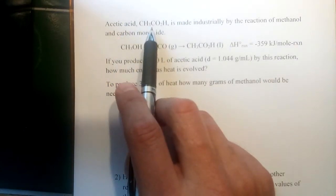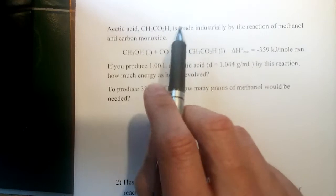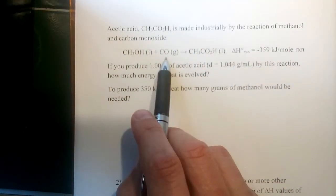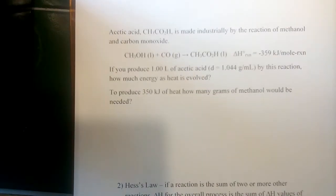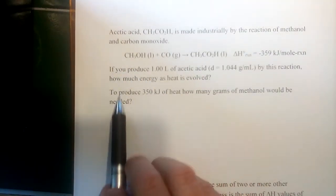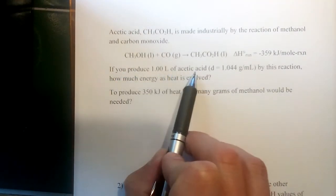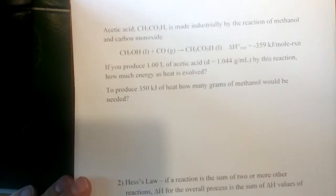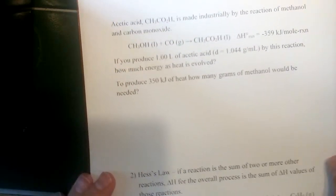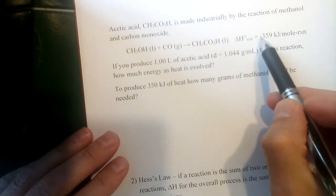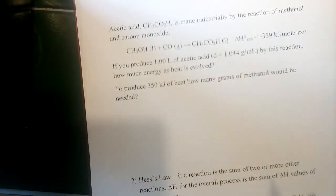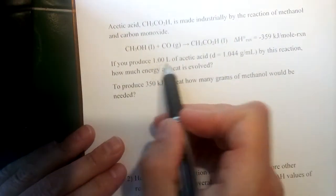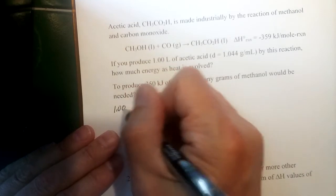And in this example, we're told acetic acid here, which is the product, is made industrially by the reaction of methanol and carbon monoxide. Those are the two reactants. And we're asked two different questions here. If you produce one liter of acetic acid, we're given its density, that will be helpful. How much energy as heat would be evolved? Now notice that's a negative enthalpy change. That means heat is being produced. So heat is being evolved by this reaction.